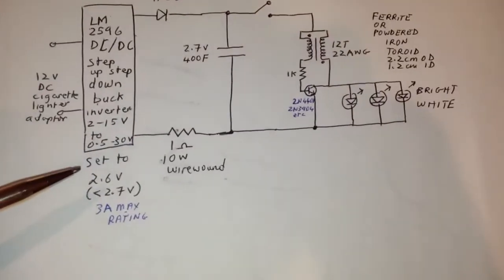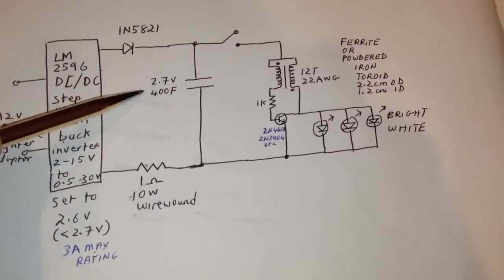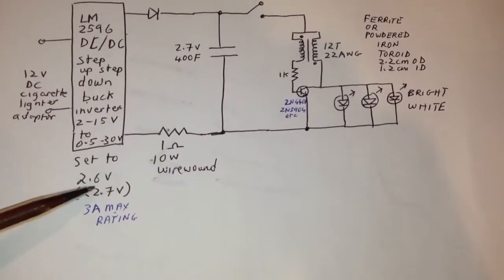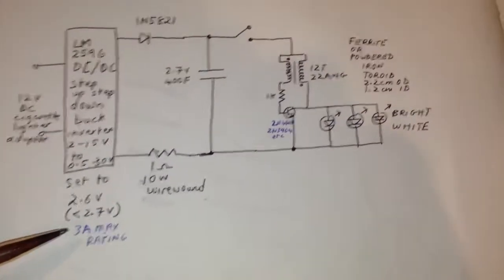It's got a trimmer on it so you can set the trimmer to less than 2.7 volts which is the maximum voltage on your ultracapacitor. So I've set it to 2.6 volts. This buck is 3 amps maximum rating.